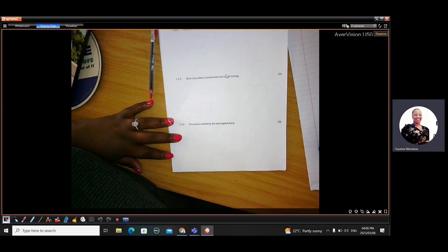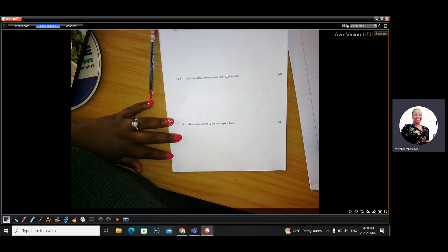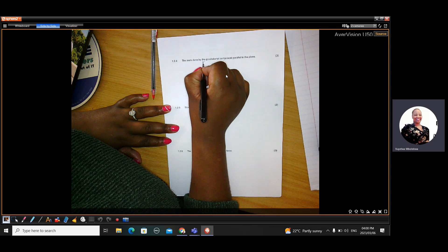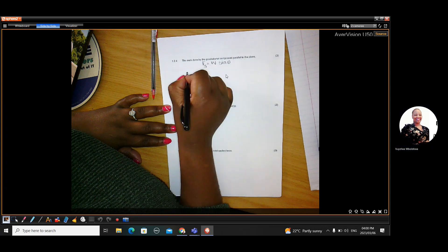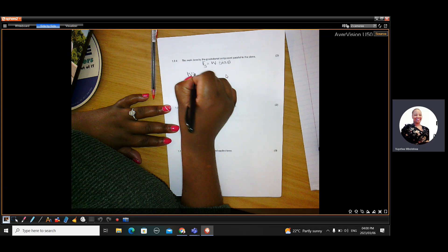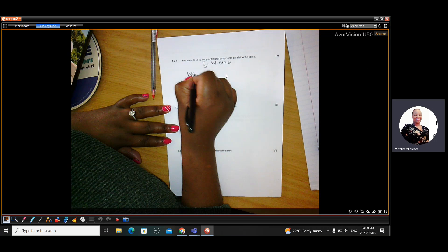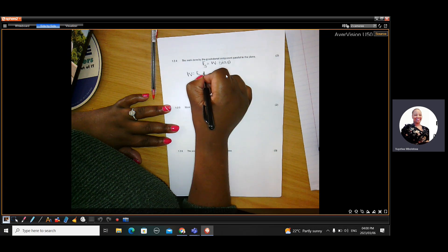Then the next thing they want work done by the gravitational component parallel to the plane. So the gravitational component parallel to the plane is FS. And the formula to calculate FS is W times by sine theta. Okay. So work done will be FS times by the distance.